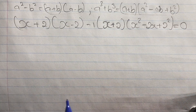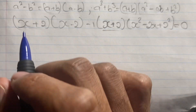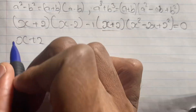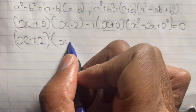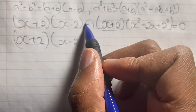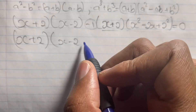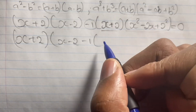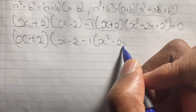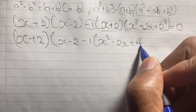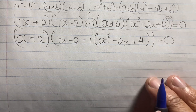We can now factor the common term (x plus 2) from the equation. Factoring out (x plus 2), we have (x plus 2) times the quantity: (x minus 2) minus 1 times (x squared minus 2x plus 4), all equal to 0. Note that 2 squared gives us 4.